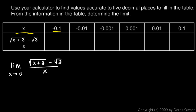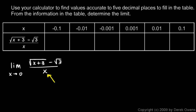Instead, we'll take this function and put in values of x near zero. We have negative 0.1, negative 0.01, and negative 0.001 — these values are approaching zero from the left. On the right side we have 0.001, 0.01, and 0.1, approaching zero from the right. We can't put in x = 0, but we can put in values near zero and see if they converge on a particular value.